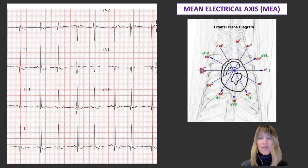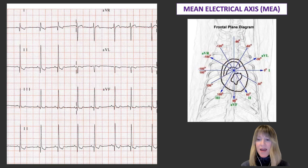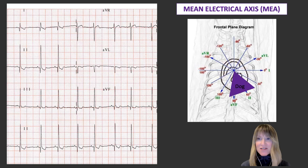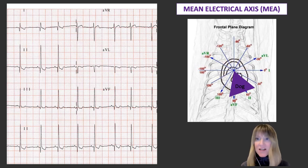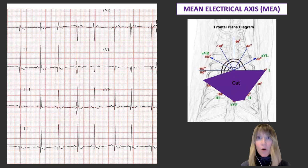If we remember that the left ventricle has more mass, we can comprehend that the MEA in the normal animal is pulled towards the left — leftward. Specifically in the dog, the normal MEA is roughly 40 to 100 degrees, the way these degrees are oriented around that circle. In the cat, it's quite a bit wider — the normal MEA is from zero to about 160 degrees.